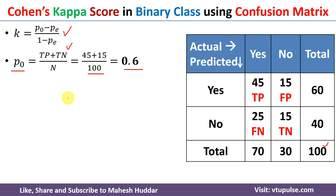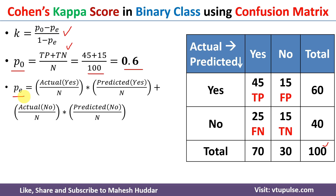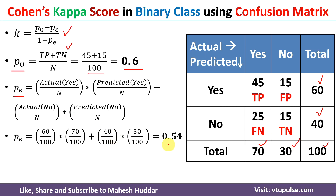Now, what is pe? pe represents the disagreement between actual and predicted. It is calculated as: pe = (actual yes / N × predicted yes / N) + (actual no / N × predicted no / N). Actual yes = 60, predicted yes = 70, actual no = 40, predicted no = 30, and N = 100. Putting all these values into the equation gives pe = 0.54.